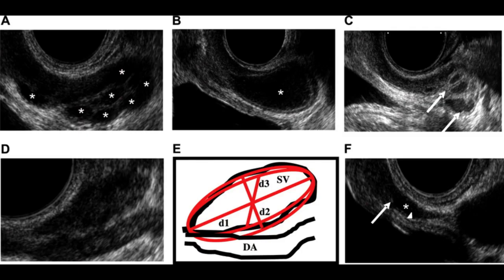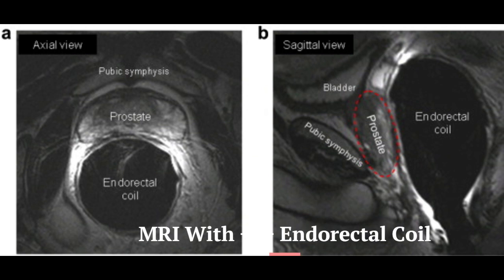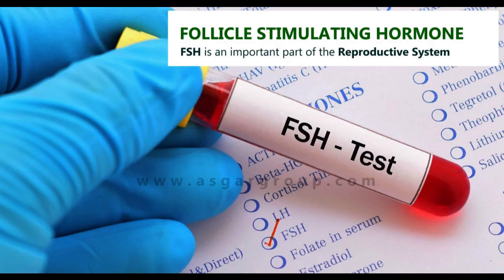Recently, high-resolution transrectal ultrasound has virtually replaced the more invasive vasography for the diagnosis. MRI with endorectal coil is recommended in suspicious cases without transrectal ultrasound findings, as it is excellent for the detection of small cysts.